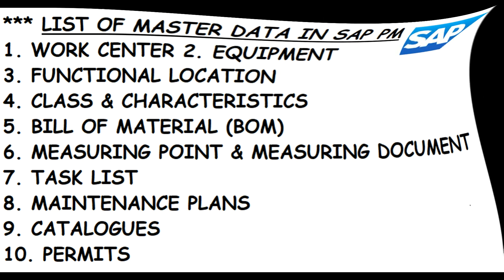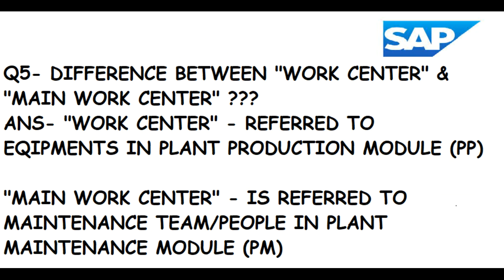The sixth question is: what is the difference between Work Center and Main Work Center? While creating equipment using T-code IE01, you will notice both terms in different tabs. Work Center refers to equipment in the plant and belongs to the PP (Plant Production) module. Main Work Center is used in the PM (Plant Maintenance) module and refers to the maintenance team or people responsible for maintenance.